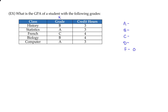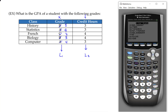Since grades are ordinal, we can encode them with numbers: F is worth 0 points, D is 1, C is 2, B is 3, and A is 4. These are known as grade points — that's why this is called a grade point average, or GPA. So we change all B's to 3, A's to 4, and C's to 2. The credit hours act as frequencies. Individual grade point values go into L1 and the frequencies go into L2. Let's set that up in the calculator.